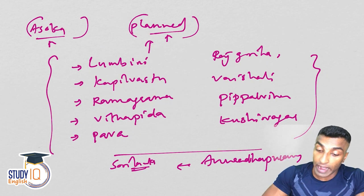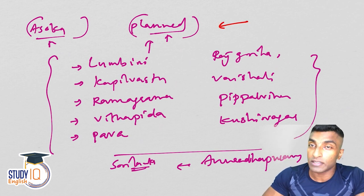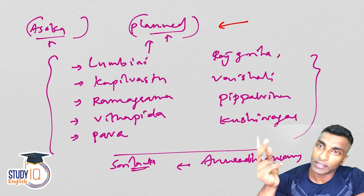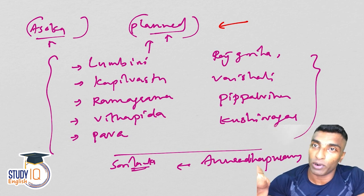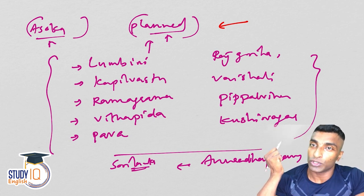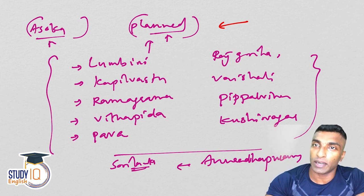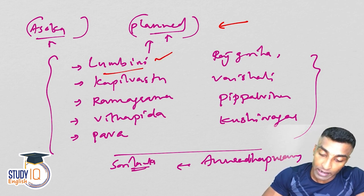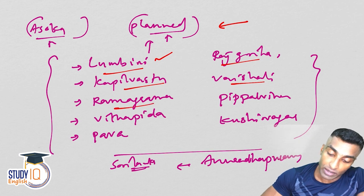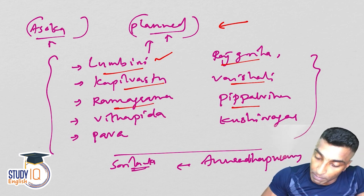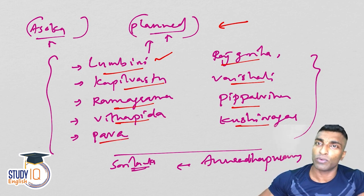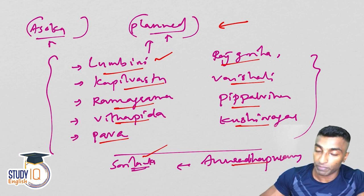We discussed about the nine most important Stupas, which were actually constructed by Ashoka with the relics of Buddha. There are also some other Stupas which use symbolic relics of Buddha. Stupas are basically constructed upon the relics of Buddha. The nine important ones are: Lumbini, Rajagriha, Kapilavasthu, Vaishali, Ramagrama, Pipalvina, Vidhapid, Kushinagar and Pava. Outside India, we also discussed Anuradhapuram in Sri Lanka.